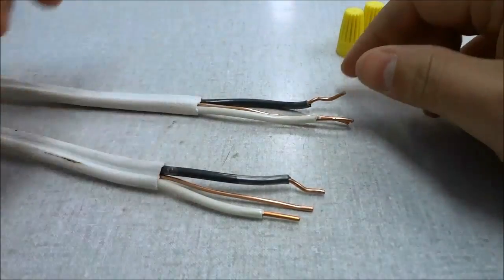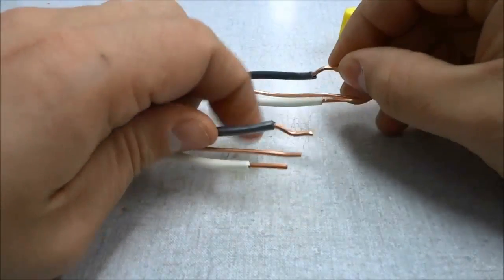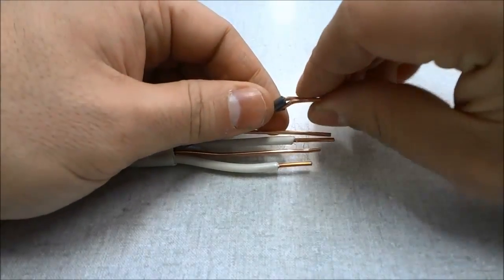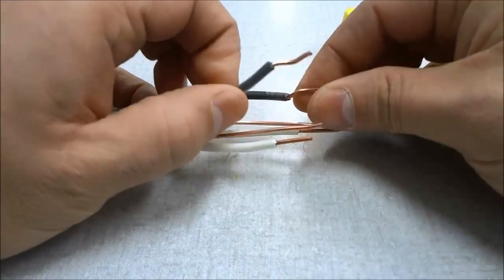So the first step is to connect the black wires. Now these are the hot wires, they are the power wires basically. So we are going to get the two wires together, make sure that they are stripped properly.